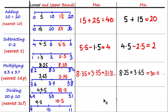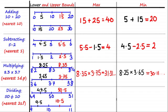To find the maximum value when dividing, you want a large number divided by a small number, so you use the upper bound divided by the lower bound. The maximum is 50.5 divided by 9.5, which equals 5.31 and so on.